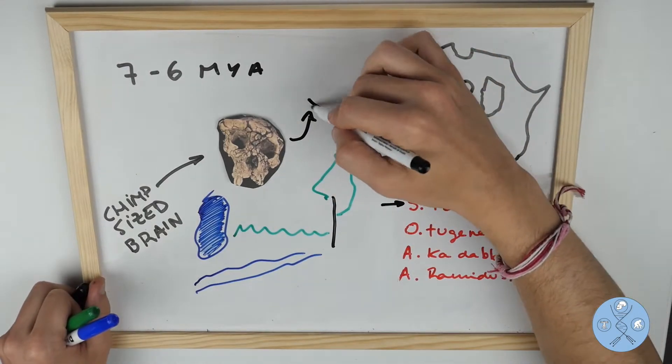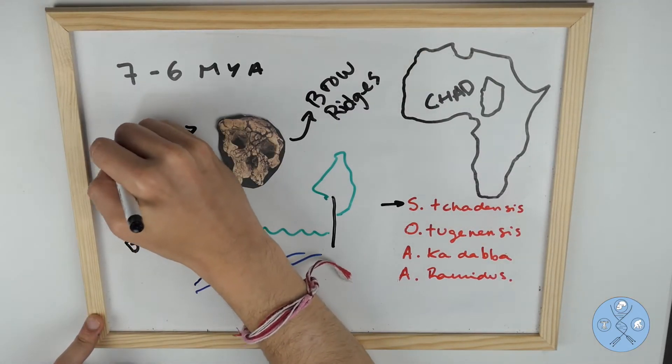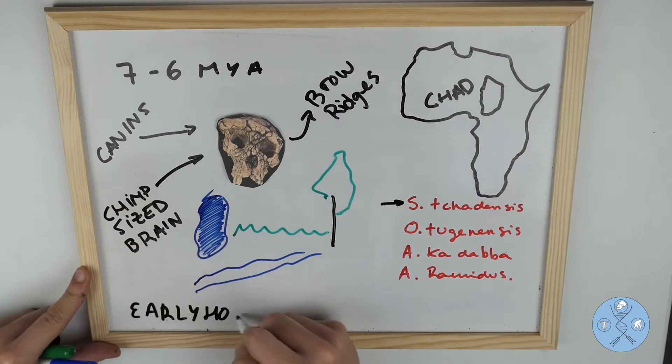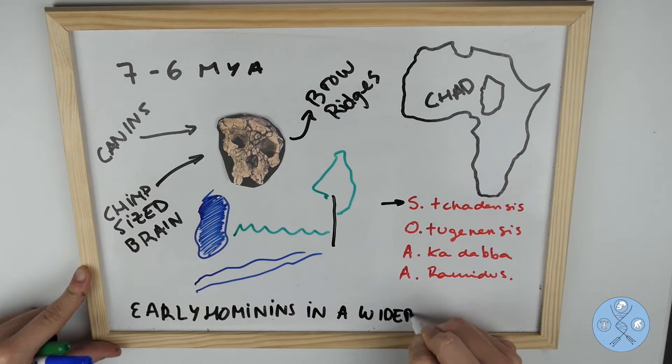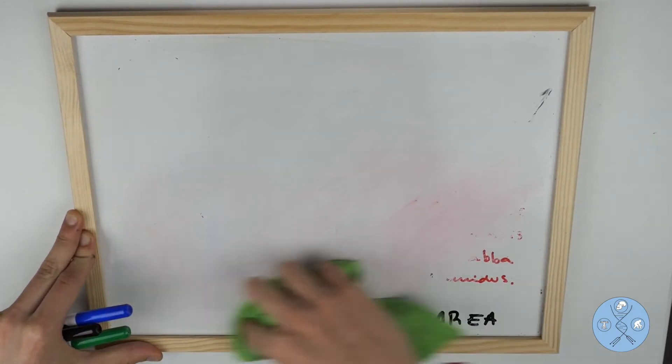The jaws are thicker than the one of chimps and some features of the canines point towards the possibility of an early hominin. However, it is a matter of debate whether this species is a hominin. If it really is a hominin, the location of the evidence would mean that earliest hominins occupied a wider area of Africa than previously thought.